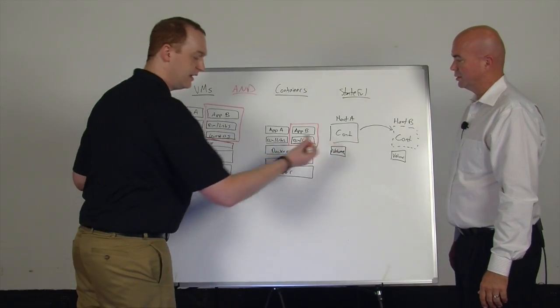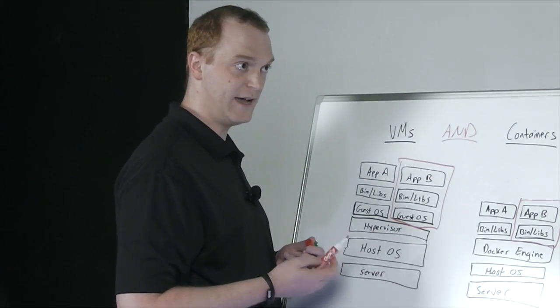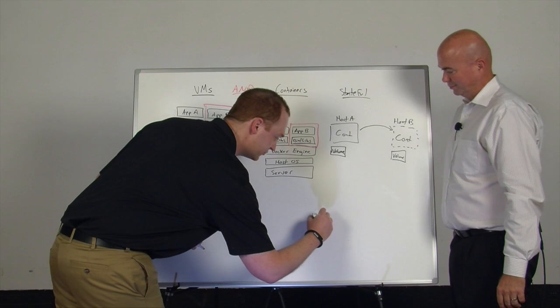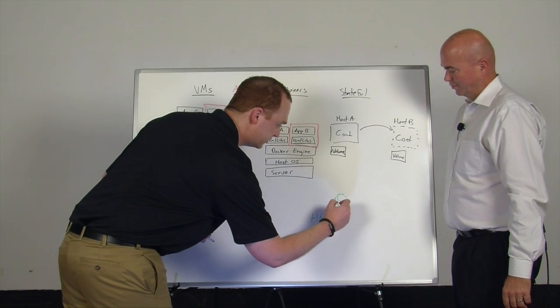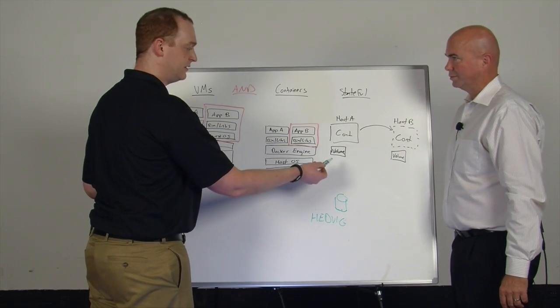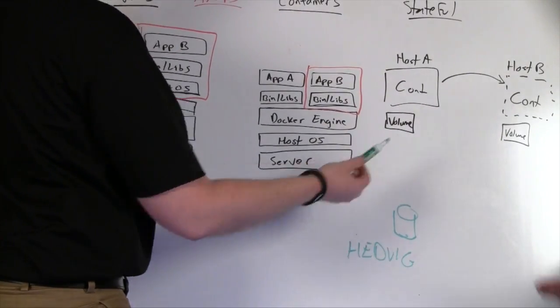So as I migrate these containers, what I worry about is how do I make sure that the underlying data actually has access to it? So imagine now you want Hedvig as your underlying storage for this. And so the challenge is if I'm going to carve up a storage asset, it's easy to connect it to one container, but as I move this container over, how does this container know to get to its underlying stateful data?